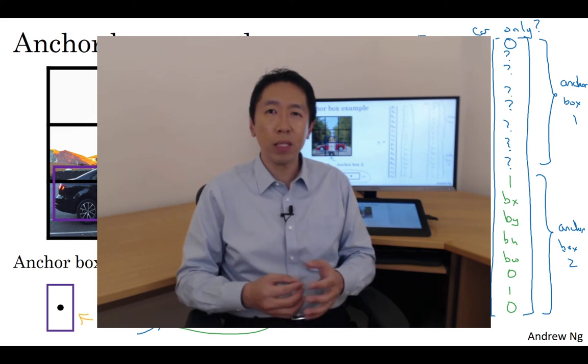So finally, how do you choose the anchor boxes? People used to just choose them by hand - choose maybe five or ten anchor box shapes that span a variety of shapes that seems to cover the types of objects you seem to detect. As a much more advanced version, just an advanced comment for those of you that have knowledge in machine learning: an even better way to do this in one of the later YOLO research papers is to use a k-means algorithm to group together the types of object shapes you tend to get. And if you use that to select a set of anchor boxes that is most stereotypically representative of the maybe multiple, maybe dozens of object classes you're trying to detect - that's a more advanced way to automatically choose the anchor boxes. And if you just choose by hand a variety of shapes that reasonably spans the set of object shapes you expect to detect - some tall skinny ones, some fat wide ones - that should work reasonably as well.